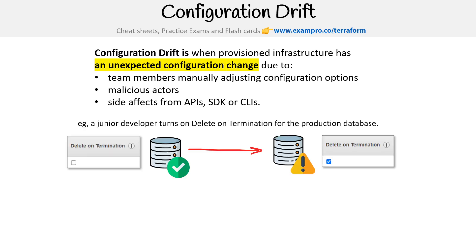An example could be: imagine you have a server like a database, and a junior developer turns off delete-on-termination for your production database. This could be a problem where, let's say there's an accidental deletion of the database — this feature would protect the database from deletion, but if it's turned off, you don't have that protection.